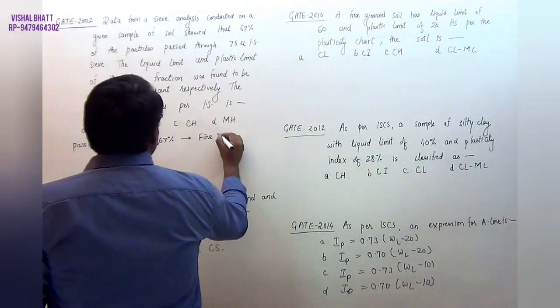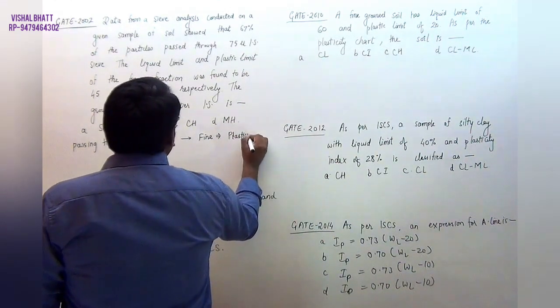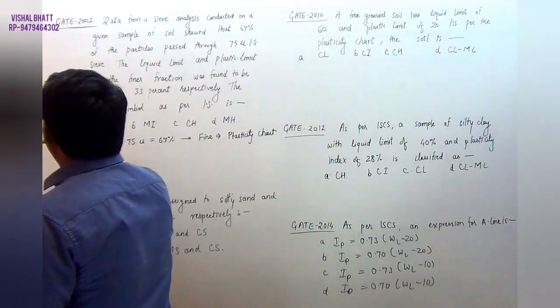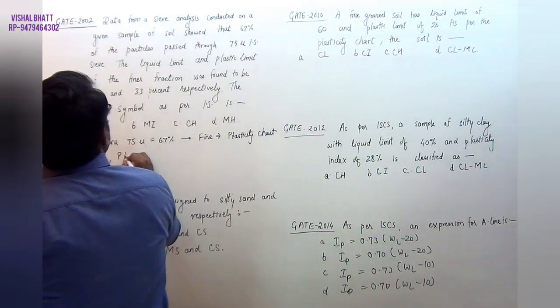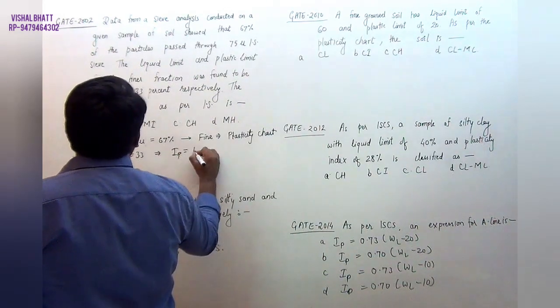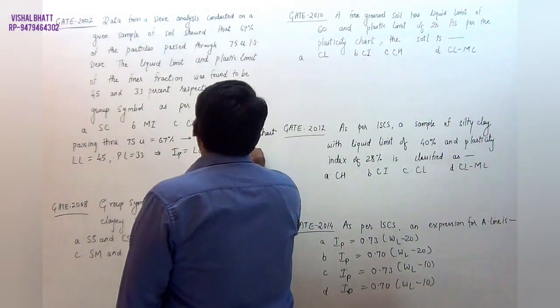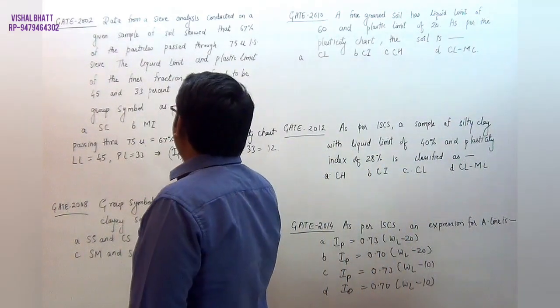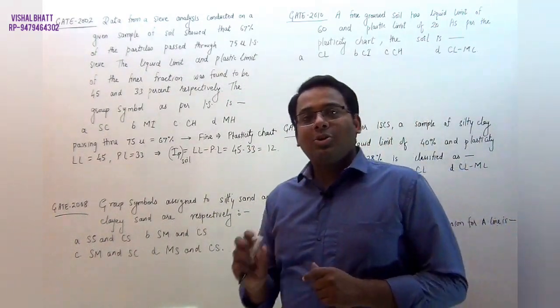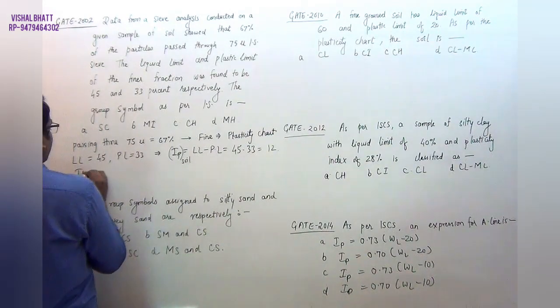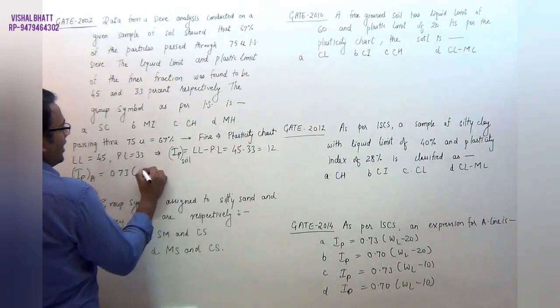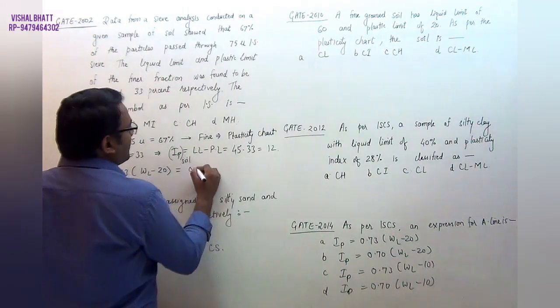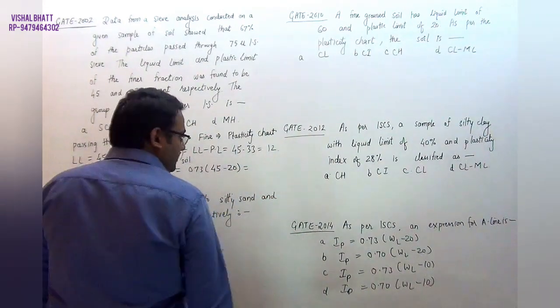And if it is fine-grained, it means that I have to use the classification of the plasticity chart. Now, if I check here, the liquid limit is 45 and the plastic limit is 33. So I can easily calculate that the IP will be equal to LL minus PL, and that will be 45 minus 33, and that will be 12. So if I check here, the liquid limit will be equal to LL minus 20.